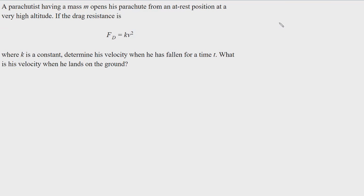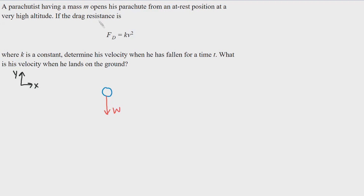What is his velocity when he lands on the ground? The first thing we're going to do is draw the free body diagram, and I'm going to define our axes: right is positive, up is positive. We're going to define the parachutist as just a circle to simplify the drawing. The only forces acting on this parachutist are going to be the weight due to mass M, and a drag force pulling upward due to the shape or the fluid he is falling in.